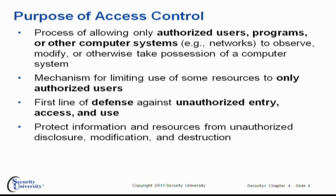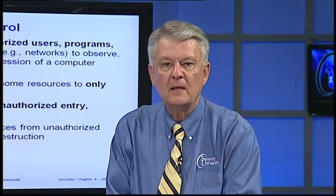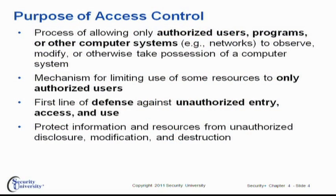So what's the purpose of access control? We want to make sure that authorized users, programs, or other computer systems — for example, those in the network — can observe, modify, or otherwise take possession of a computer system. Only authorized users can use the data resources. We also want to limit what those users can get to when they get on a particular computer system, so they don't have blanket access or full admin rights if it's not required by their job. We should always consider access control to be the first line of defense against unauthorized entry, access, use, and abuse. It's there to help us protect our valuable information resources from disclosure, modification, and destruction.